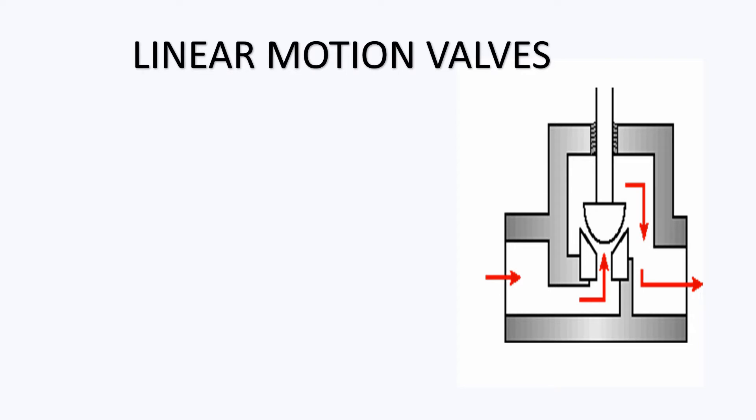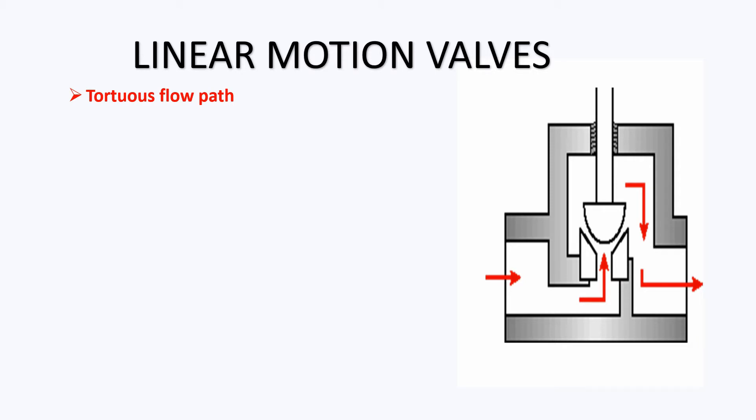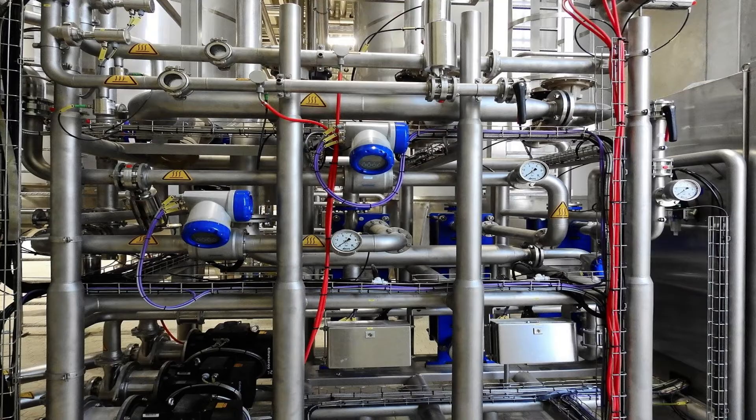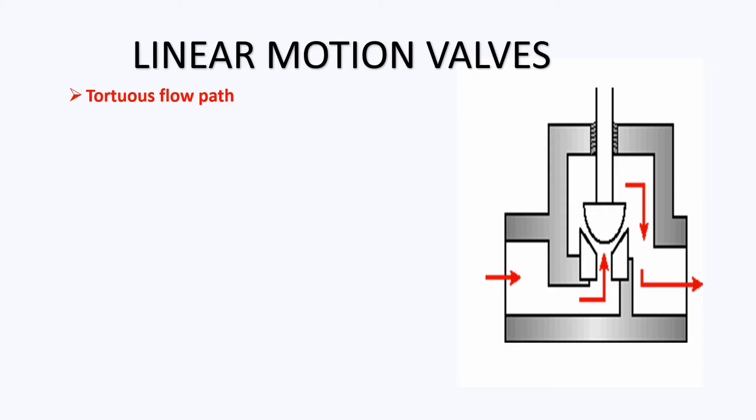This control valve which has linear motion is basically used in tortuous flow paths. In a process industry we have different piping arrangements. Some piping gets into a bend, sometimes the piping gets into a head of elevation, and if you want to have throttling services in that particular tortuous flow path, linear type valves are the best suited.